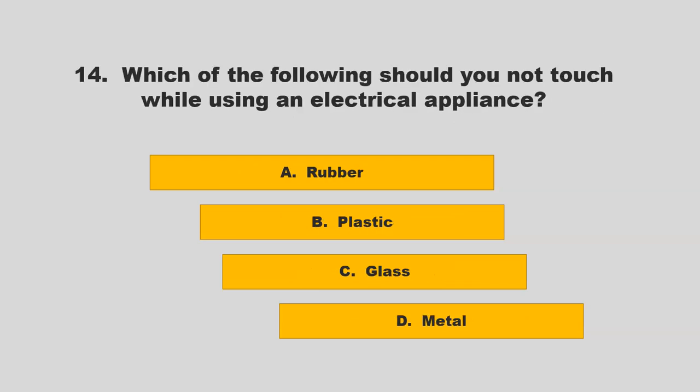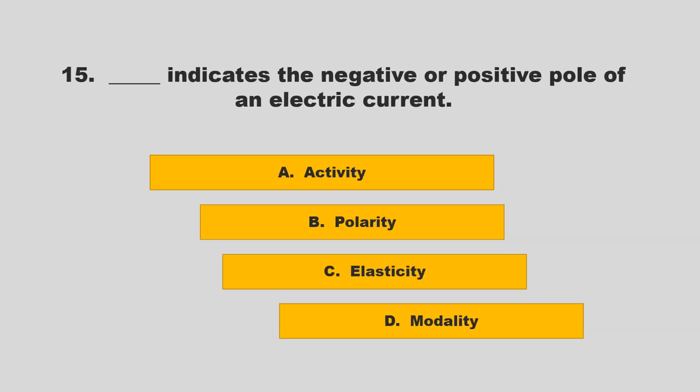Which of the following should you not touch while using an electrical appliance? Is it rubber, plastic, glass, or metal? If you chose D, metal, you are correct.